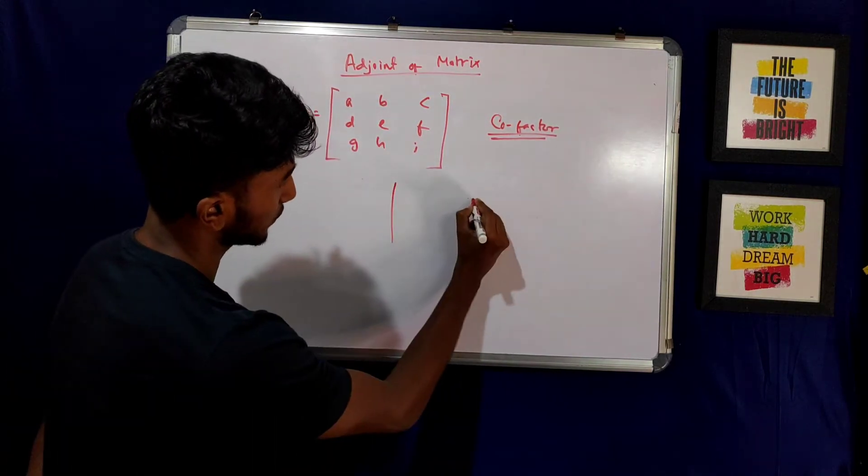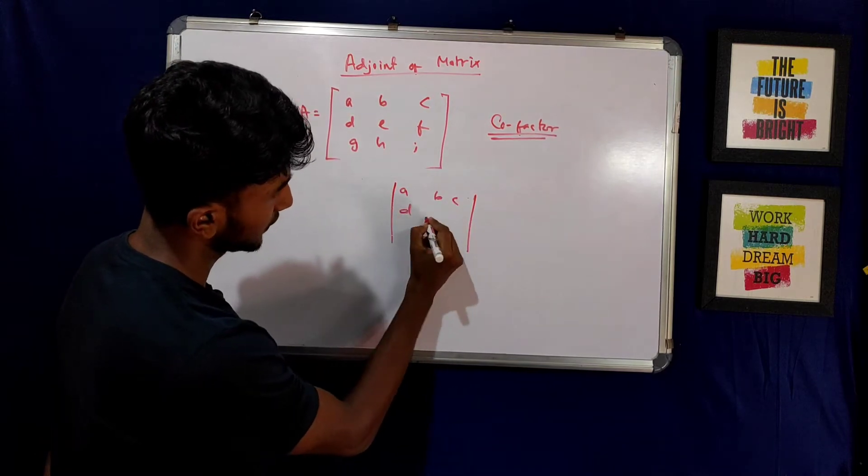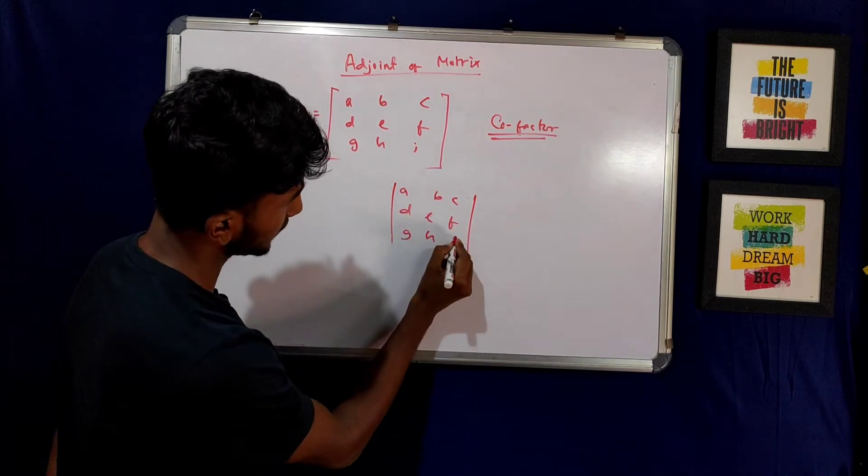I am talking about this important distinction. The matrix elements are A, B, C, D, E, F, G, H, I.